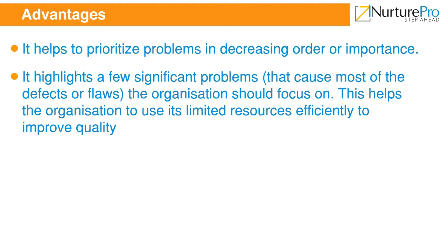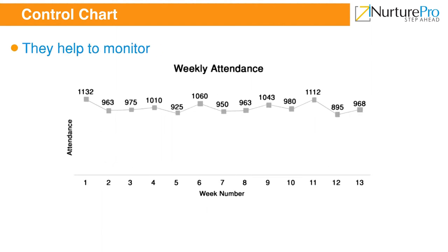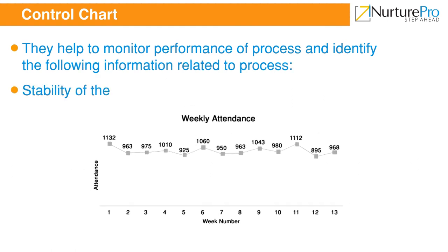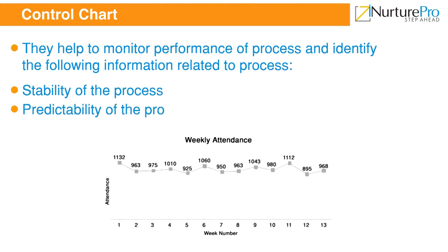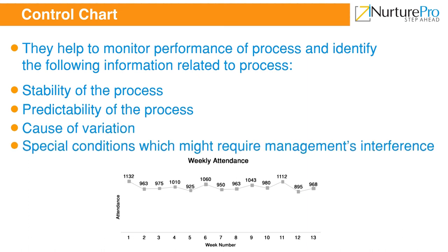Control Charts, also known as Run Charts, were popularized by Shewhart and Deming. They are complex statistical tools used to measure movement of data over time. They help to monitor the performance of a process and identify: stability of the process, predictability of the process, cause of variation, and special conditions which might require management's interference. In a control chart, data plotted within upper and lower limits means the process is consistent and under control. If the data vary, it is unpredictable and out of control.